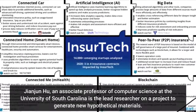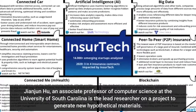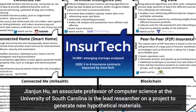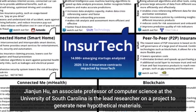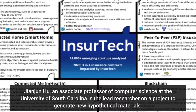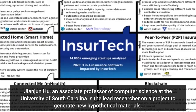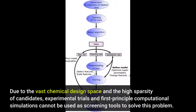Jianjun Hu, an associate professor of computer science at the University of South Carolina, is the lead researcher on a project to generate new hypothetical materials. Due to the vast chemical design space and the high sparsity of candidates, experimental trials and first-principles computational simulations cannot be used as screening tools to solve this problem.